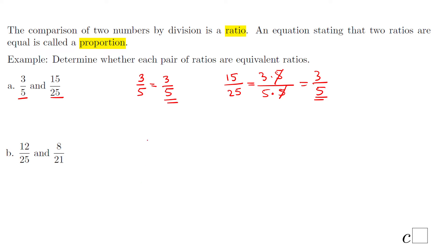For part B, we can take a look at 12 over 25 and see if we can simplify. This cannot be simplified, same about 8 over 21. So I'm going to use a calculator and do 12 divided by 25 and 8 divided by 21. 12 divided by 25 is exactly 0.48, while 8 divided by 21 is around 0.38. We notice they are not the same, so these two ratios are not equivalent.